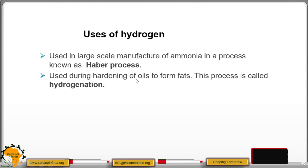Used during hardening of oils to form fats. This process is called hydrogenation. You are going to look at this hydrogenation in Form 4 when you will be looking at organic chemistry.